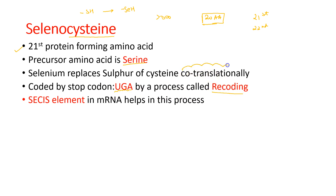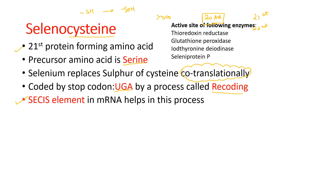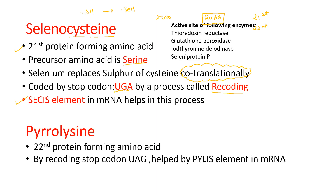Co-translational modification occurs in the synthesis of selenocysteine, which occurs co-translationally. For this, the SECIS element in mRNA is required. The 22nd amino acid is pyrrolysine. It is also coded for by a stop codon, UAG, helped by the PYLIS element in mRNA.